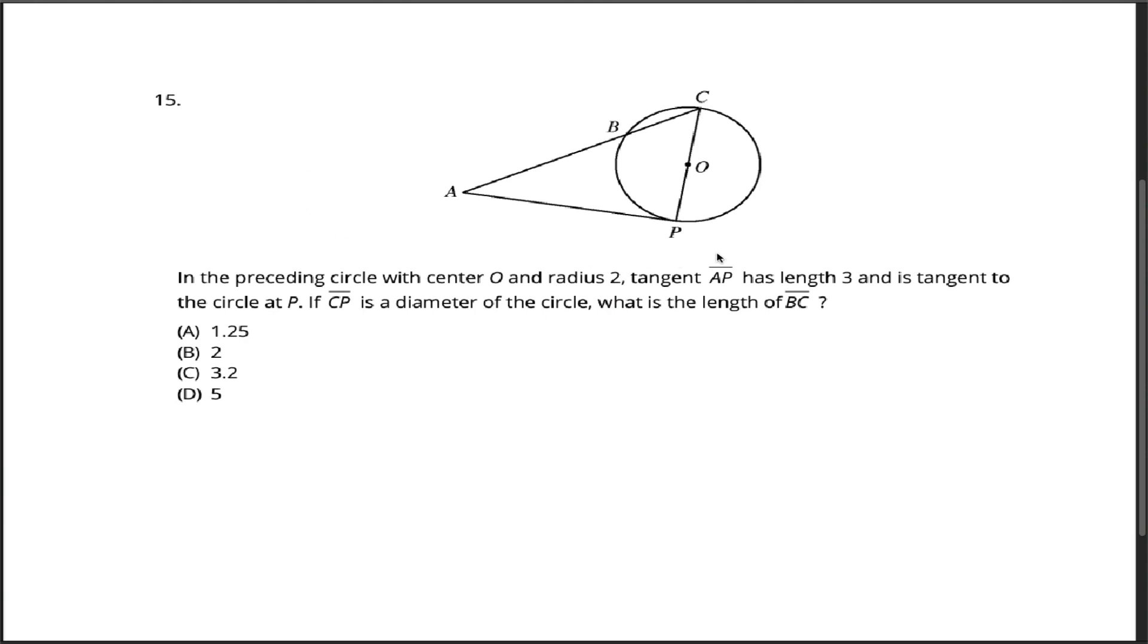Question 15. Maybe the most fun of the practice problems for the Praxis 5165 test is a geometry problem where we have to figure out the length of BC, this pink line segment right here. What we're told is that O is the center of this circle and the radius of the circle is 2, therefore line segment CP is a diameter and has length 4. And we're also told that AP is tangent to the circle and has length 3.